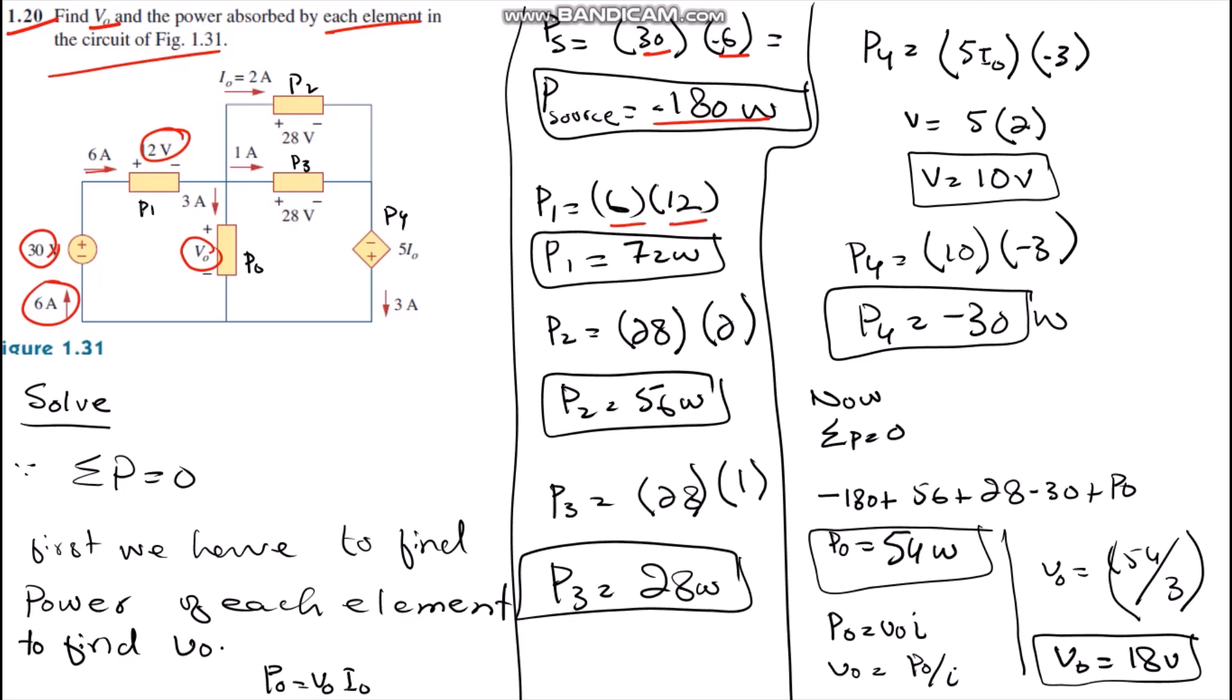P2, the power of element 2, equals 28 volts and 2 amperes entering current, both positive, so we get 56 watts. P3 has entering current positive 1 ampere and voltage also positive 28 volts, then we get P3 equals 28 watts.